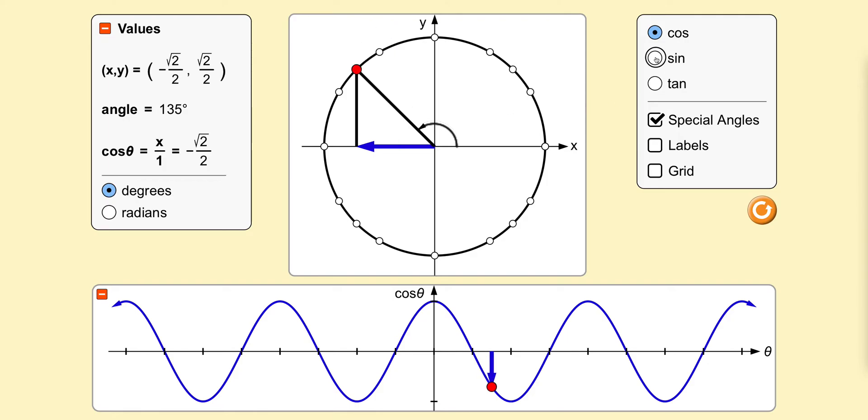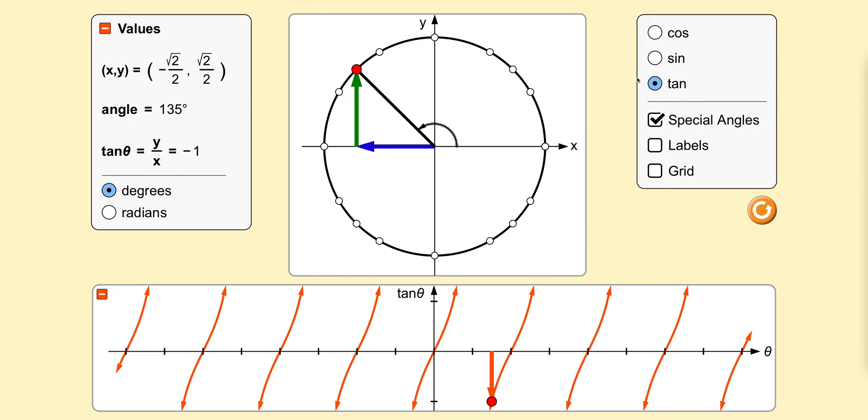We can change from cosine to sine and to tan using the menu on the right.